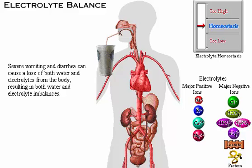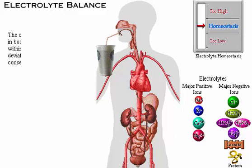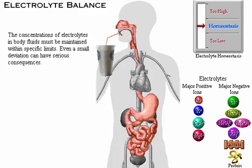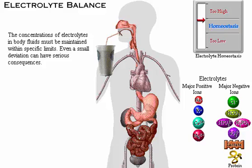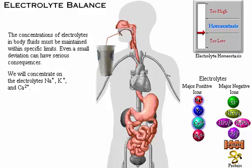Severe vomiting and diarrhea can cause a loss of both water and electrolytes from the body, resulting in both water and electrolyte imbalances. The concentrations of electrolytes in body fluids must be maintained within specific limits, and even a small deviation outside these limits can have serious or life-threatening consequences. In this topic, we will concentrate on the three most clinically significant electrolytes: sodium ions, potassium ions, and calcium ions.